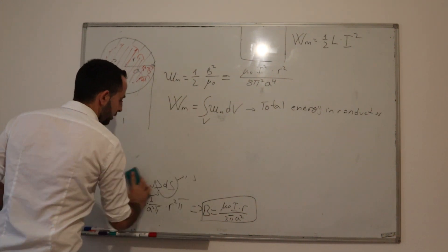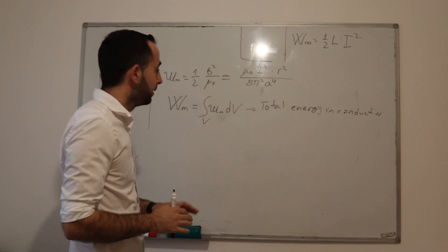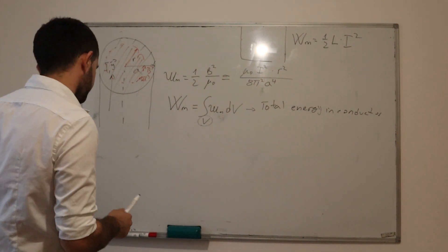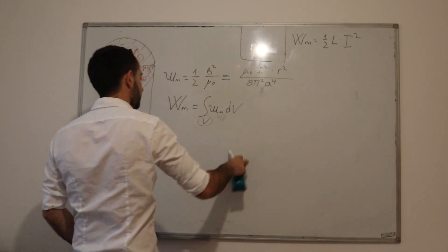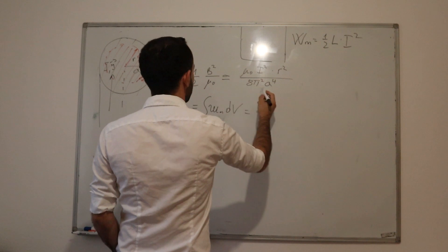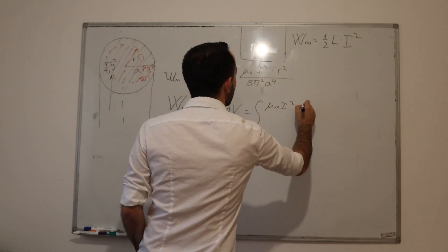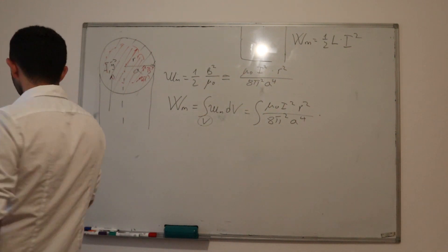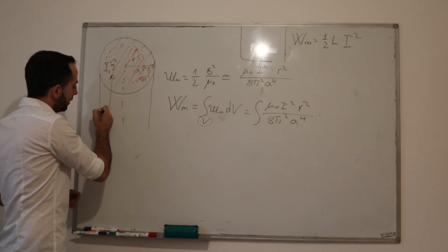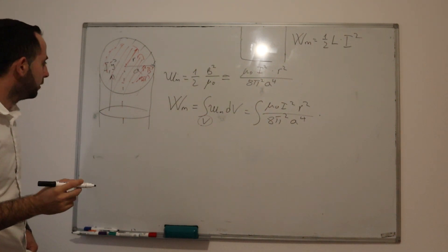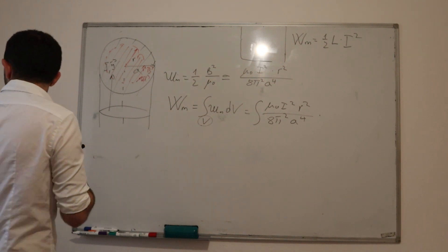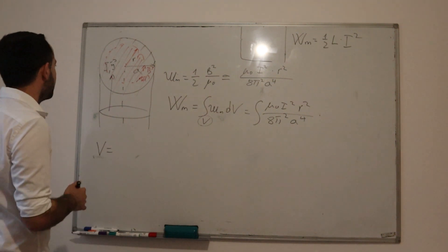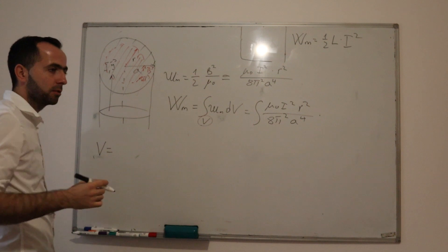How do we calculate total energy? The total energy of conductor must take in consideration complete conductor, and conductor has its volume. We put this inside a formula. Now we will get μ₀I²L² divided by 8π²A⁴ times R to the fourth. But what is our dV? It means infinitely small volume.